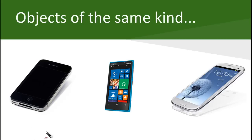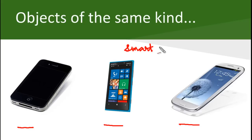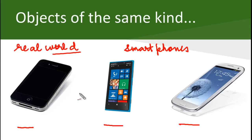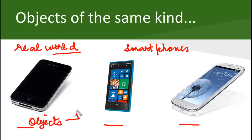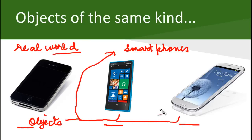There are three objects in front of you. What is one thing common between all of them? There are a lot of things common between all of them, but how will you classify them? You can term them as smartphones. In the real world, there are various objects of the same kind. An iPhone is a smartphone, a Nokia Lumia which runs the Windows OS is a smartphone, and the Samsung S3 which runs the Android OS is a smartphone. So there are various objects of the similar kind.